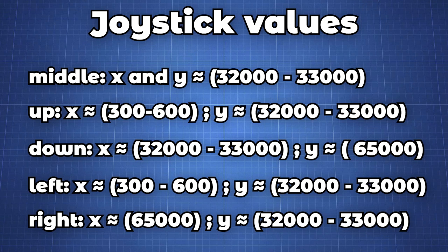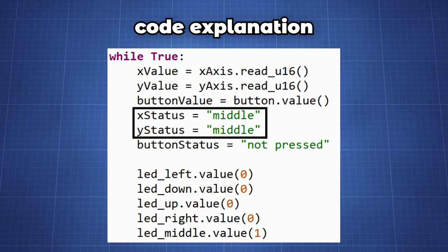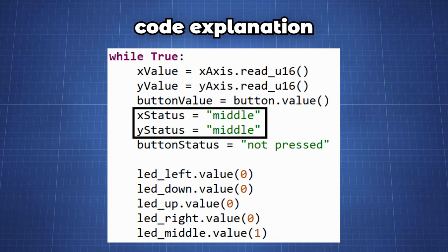Now we know the values of the joystick if it is not pushed will be roughly around 32 to 33,000 for x and y so we will just call the x_status and y_status to be in the middle. Here we set the value for all the LEDs to 0 except for the middle LED since that is our joystick's default state.